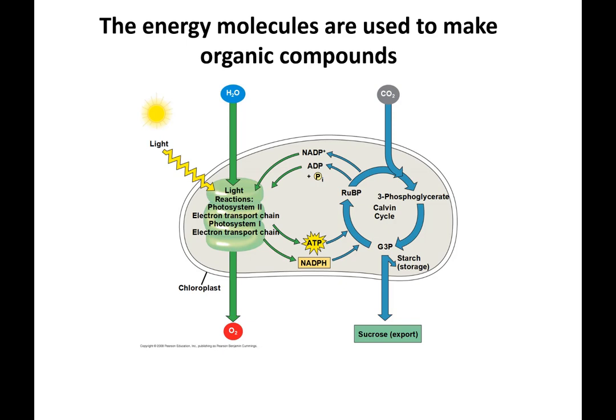So we've done the light reactions: photosystem 2, electron transport chain, photosystem 1, electron transport chain. Light and water come in, release oxygen, make ATP and NADPH. That's going to feed into the Calvin cycle.